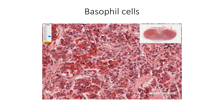Basophil cells occupy predominantly the central part of the pars distalis. Three types of cells make up the basophils: corticotrophs, secreting pro-opiomelanocortin, which is a precursor for adrenocorticotrophic hormone; gonadotrophs, secreting follicle-stimulating hormone and luteinizing hormone; and thyrotrophs, secreting thyroid-stimulating hormone. These cells can be best distinguished only by immunohistochemistry.